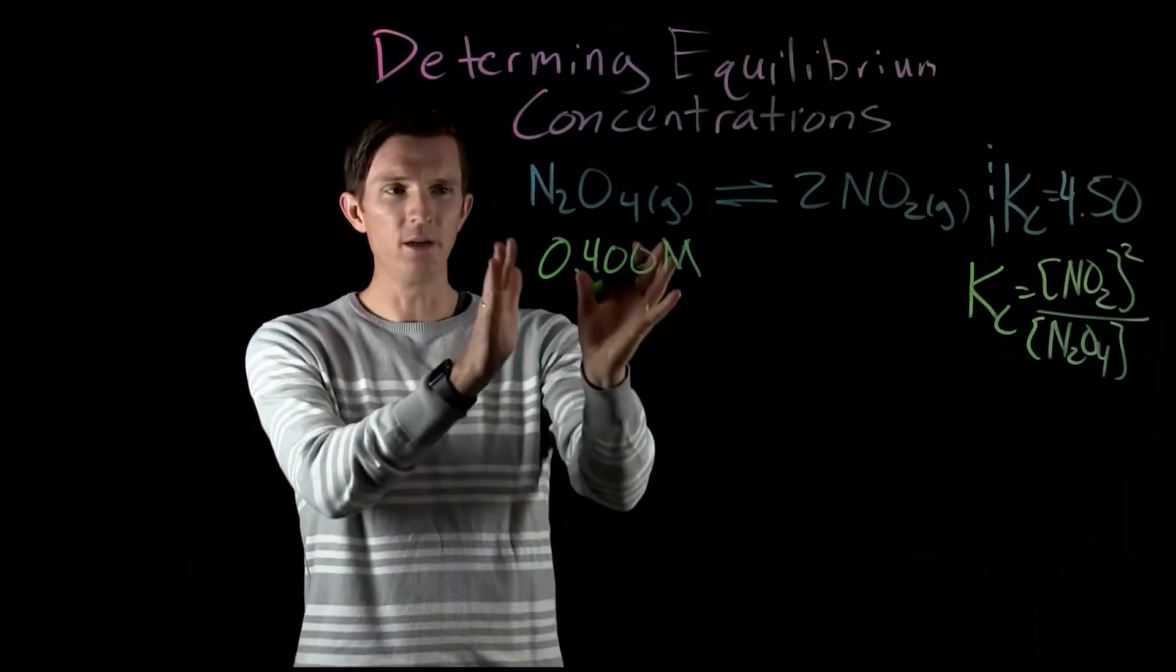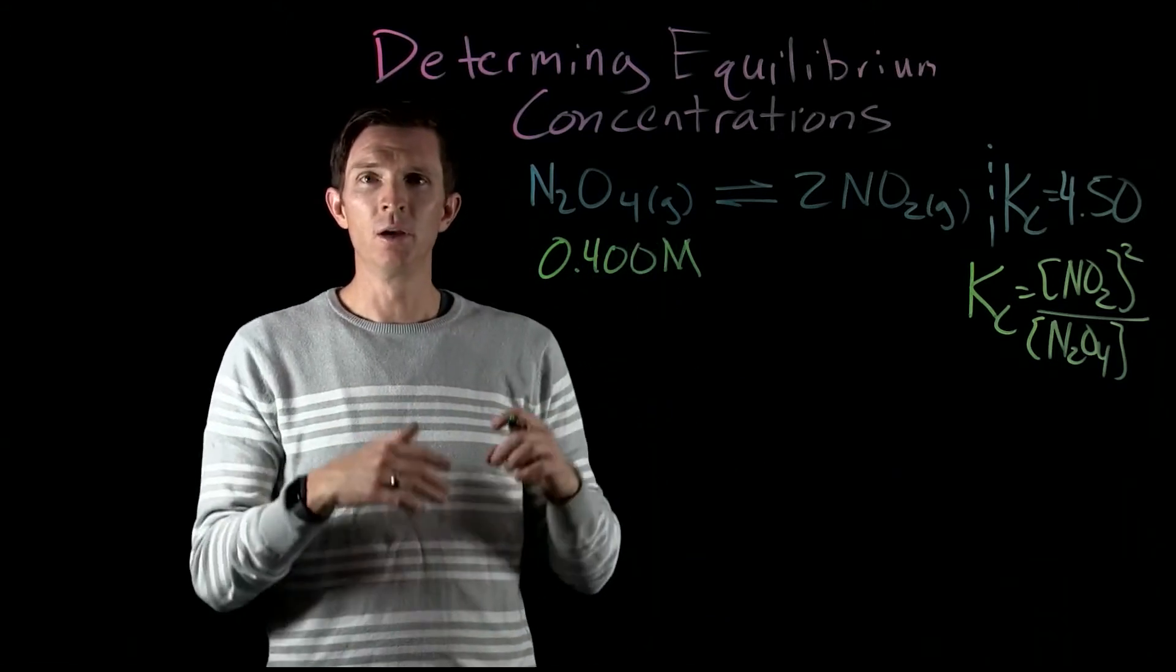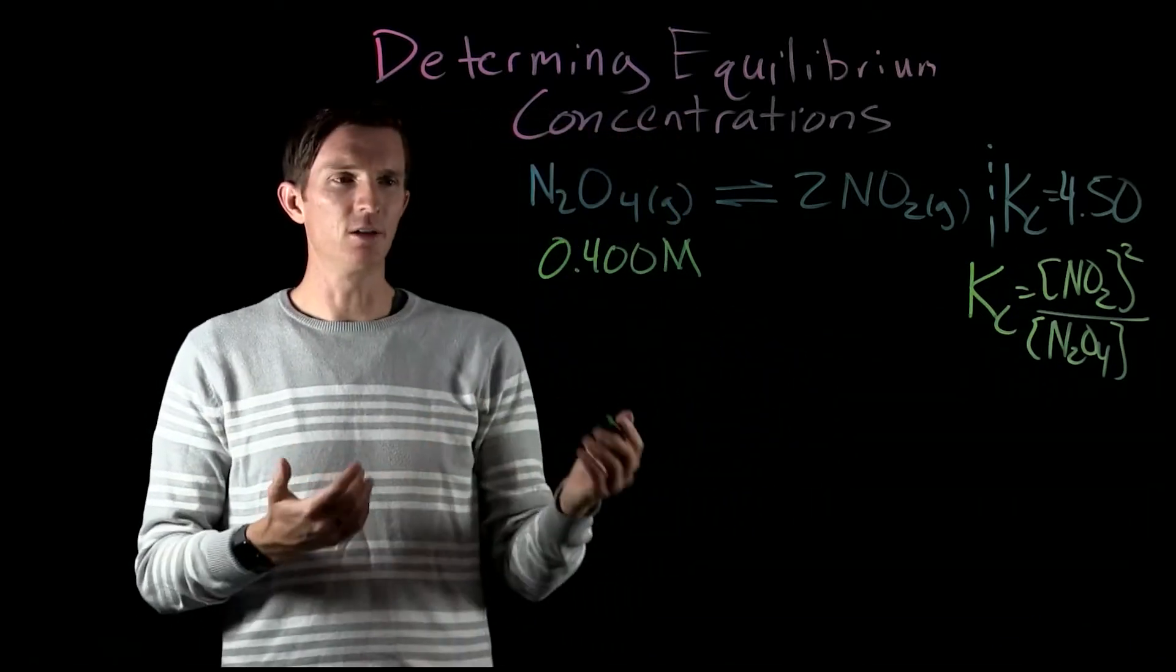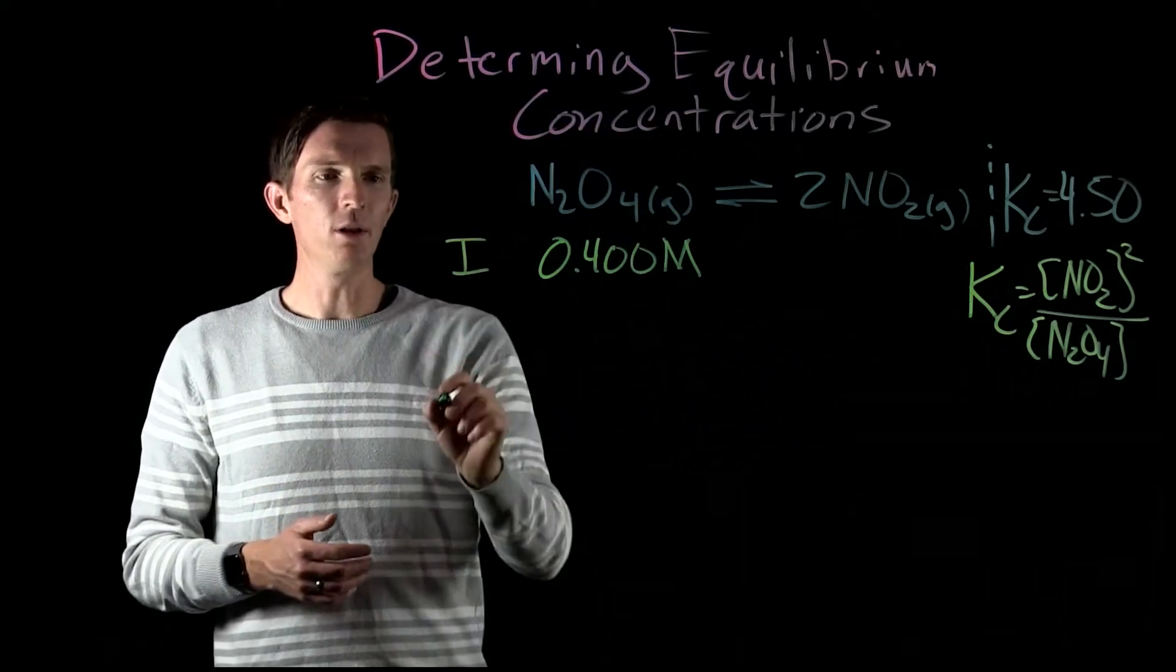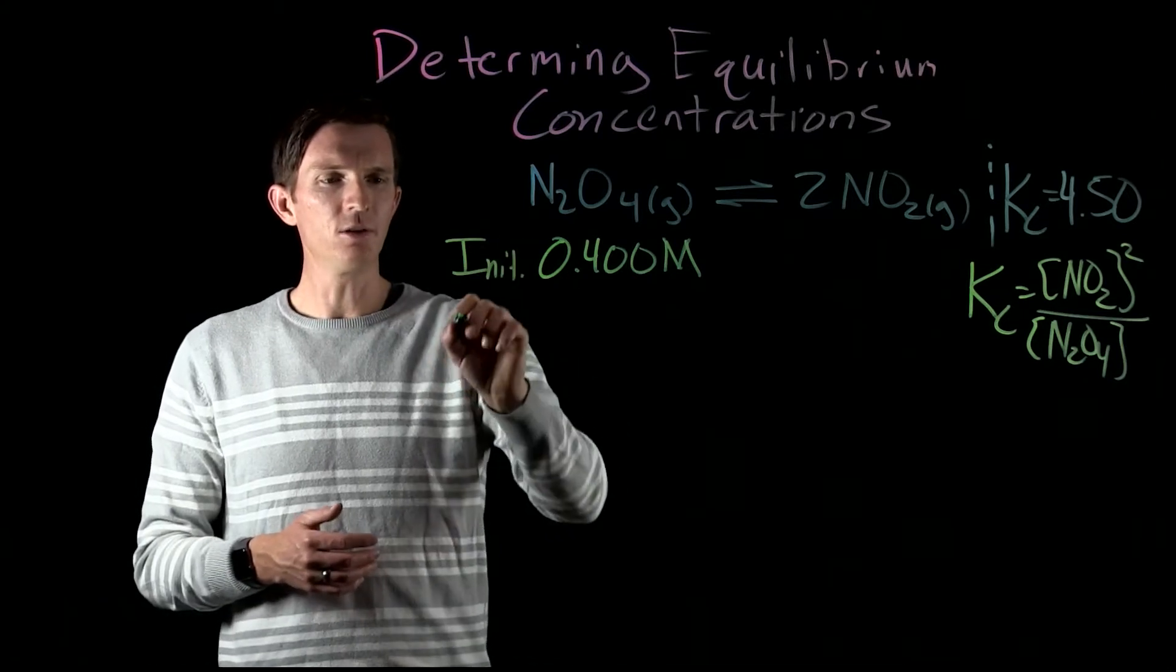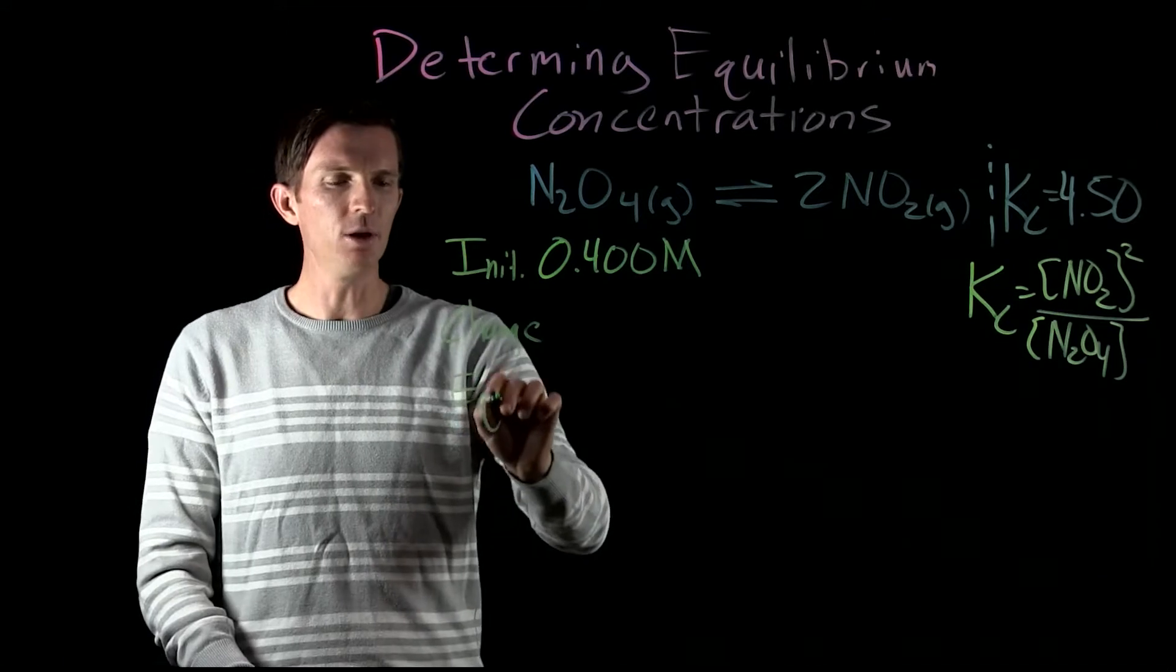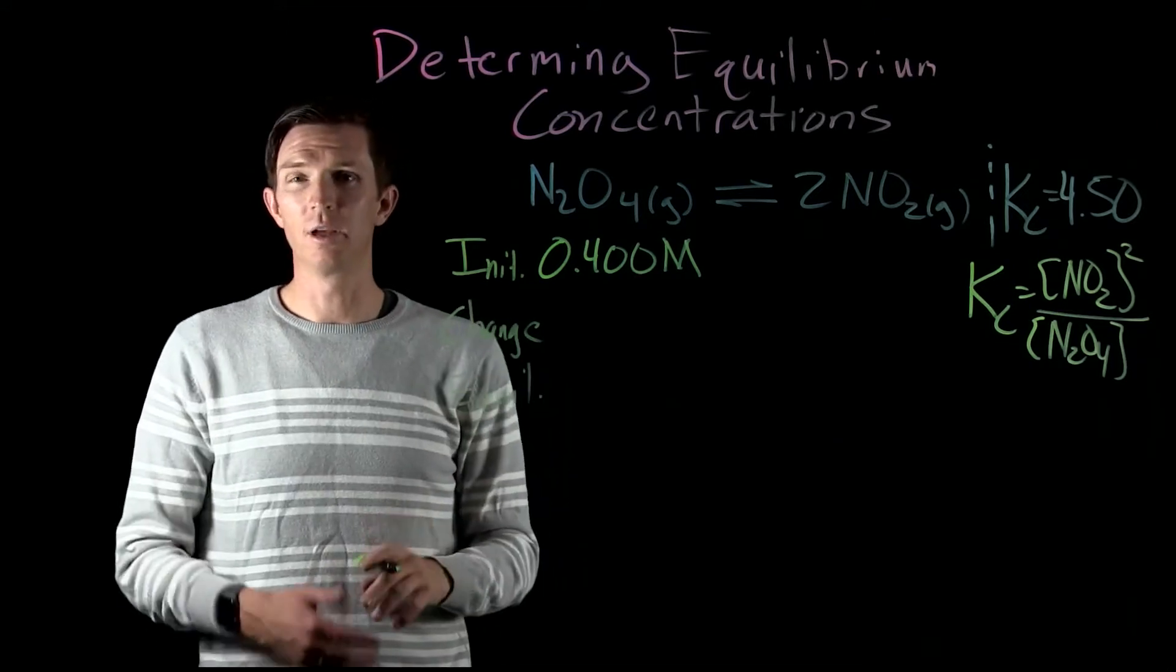So this is my initial concentration. If I'm trying to identify what my equilibrium concentration would be, I need to figure out how can I express what I know, the initial concentrations, with respect to this equilibrium concentration. So for us to do that, we're going to look at the initial, change, and equilibrium concentrations and ways that we can express that.